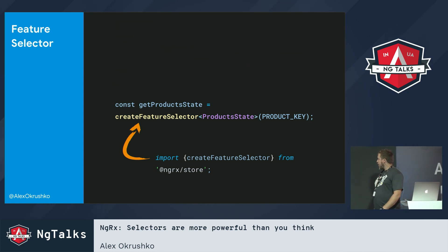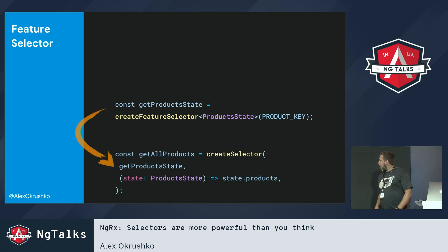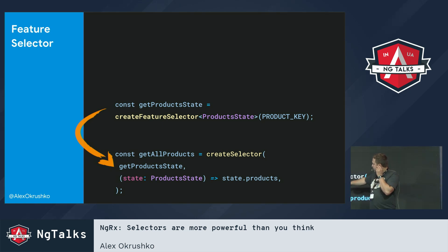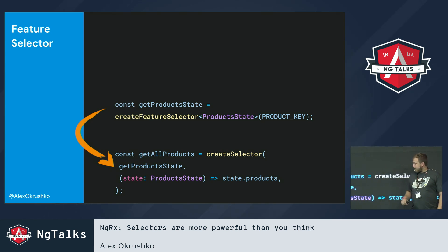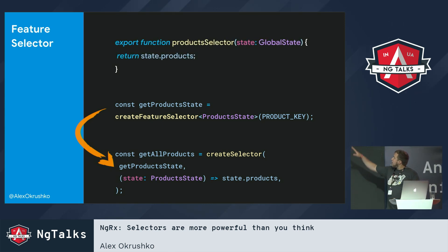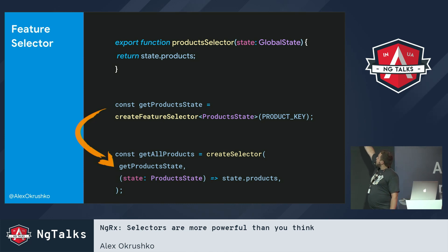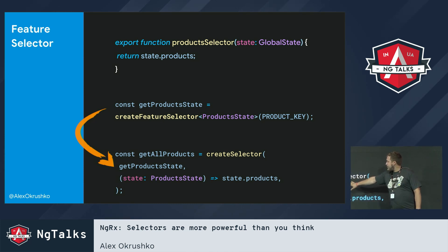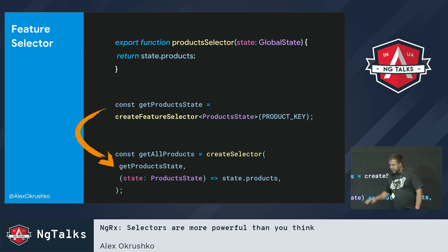Here, for example, it's a typical NgModule which has a product key. Since we're using forFeature, we also need a special function called createFeatureSelector that helps us select the top of this feature — the feature state. We then have getProducts using createSelector, and we use this product state — which is the feature state — to select our products. Comparing it to what we had before: here's our product selector using global state, and our feature selector using product state which is a feature.